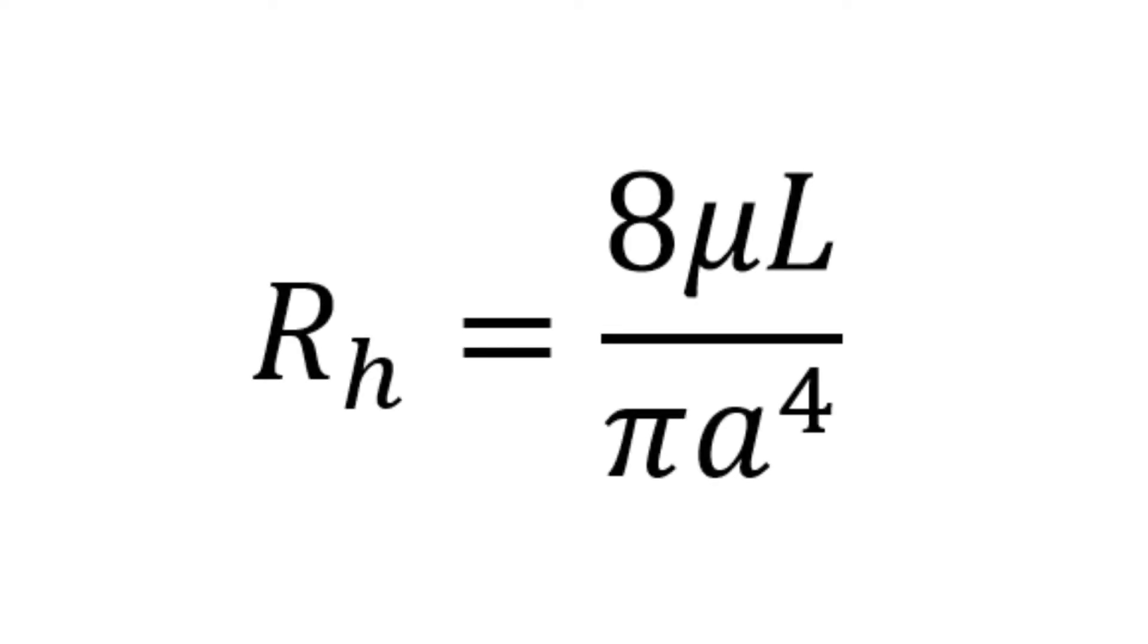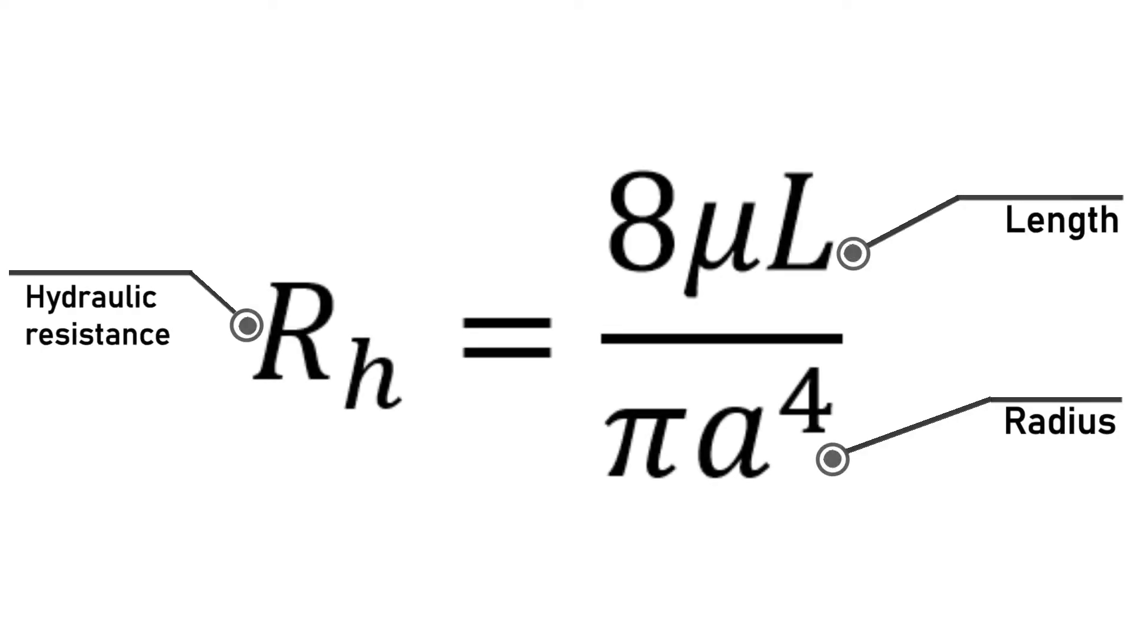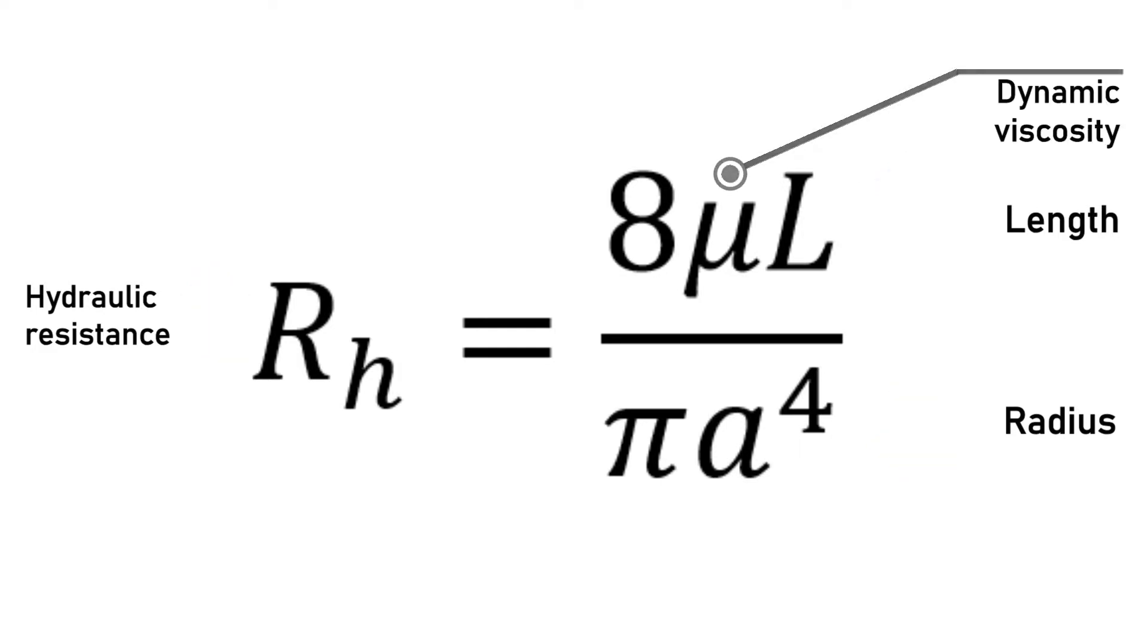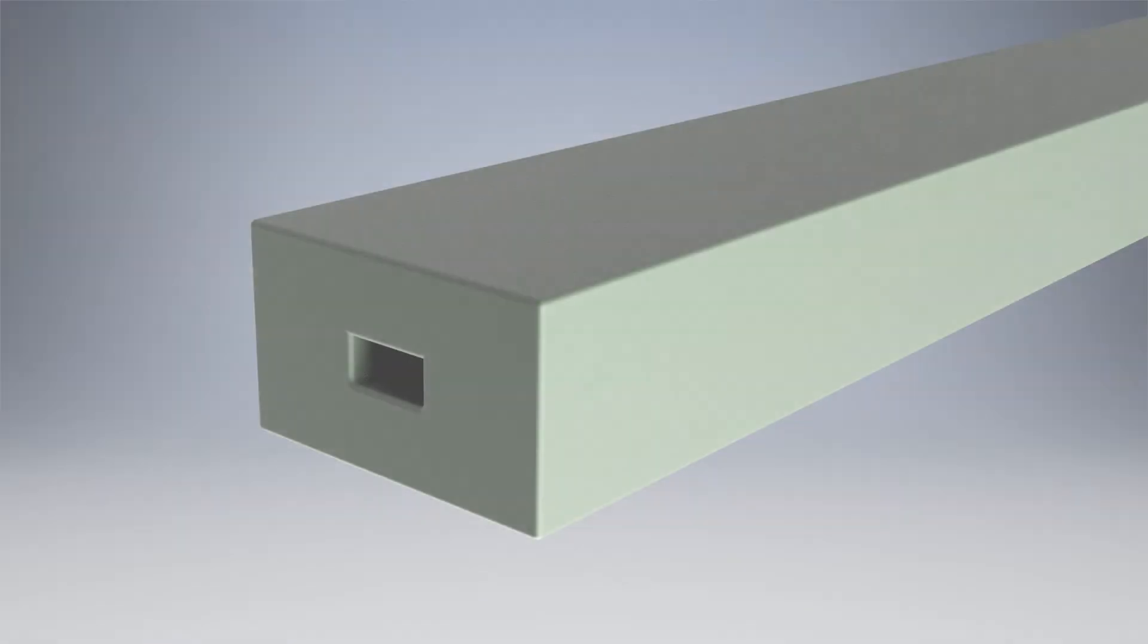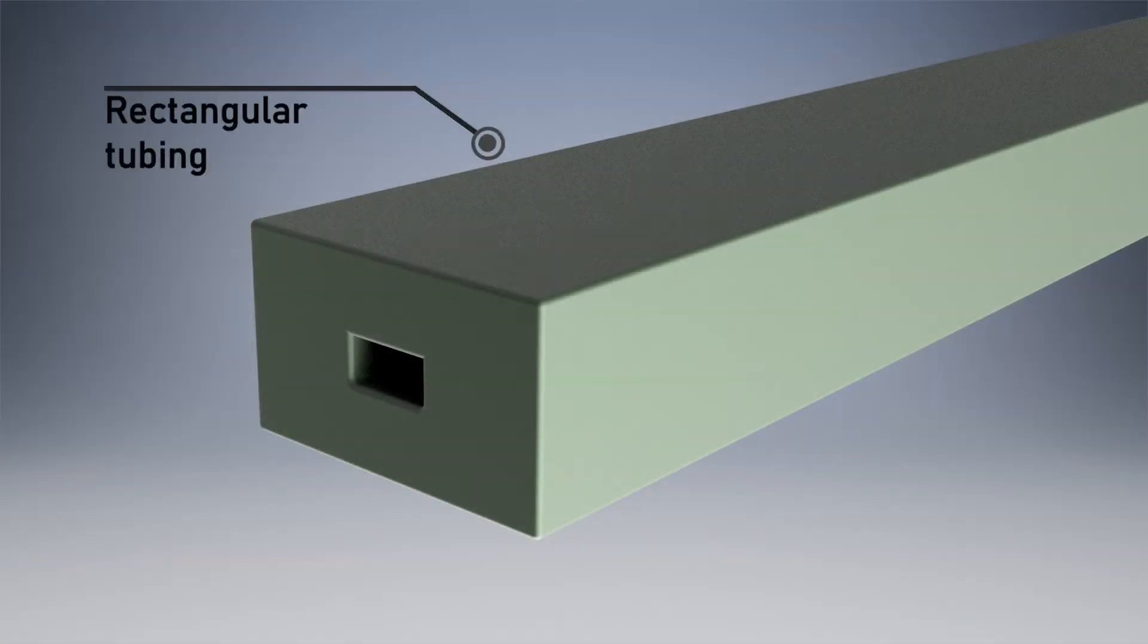These examples can also be represented by the equation shown, which states that the length is directly proportional to the resistance and the radius is inversely proportional to it. There is another factor called dynamic viscosity. This is a property of the fluid, and just like the length, it behaves directly proportional to the resistance. Even if the canal is rectangular, these properties still apply.